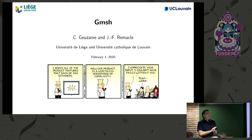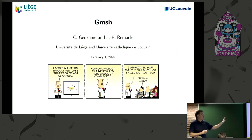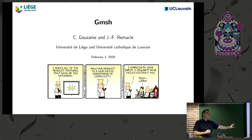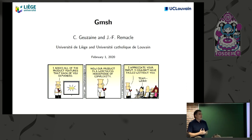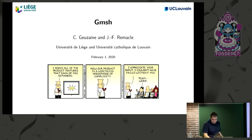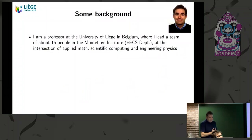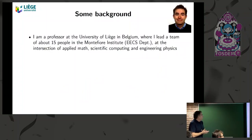It's my yellow period — you know, all painters have different periods, you have the blue one, this is the yellow one, so you'll get the yellow talk. Thanks for inviting me. I'm Christophe Gozen, a professor at the University of Liège.